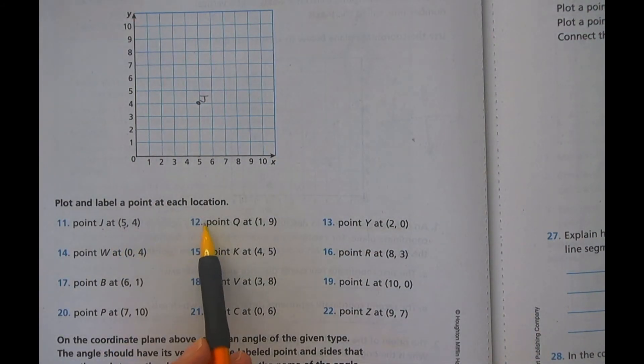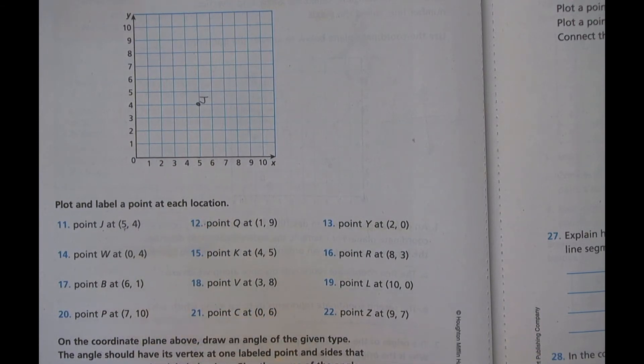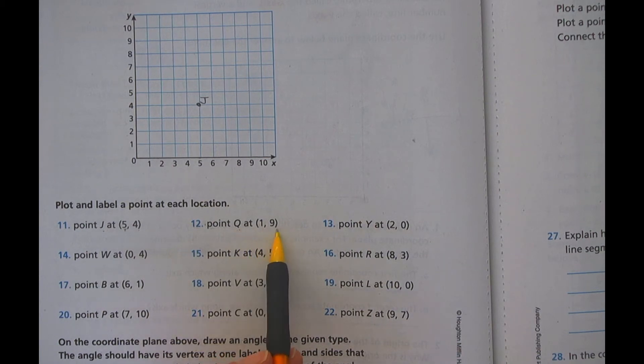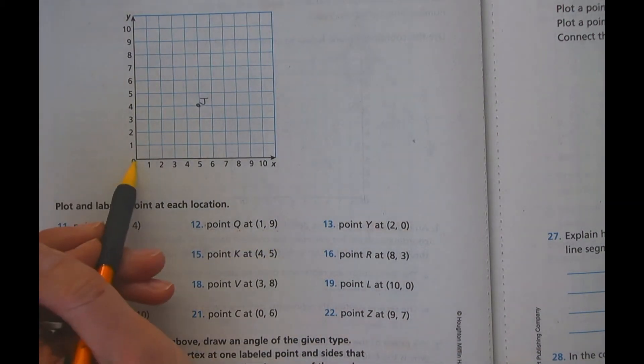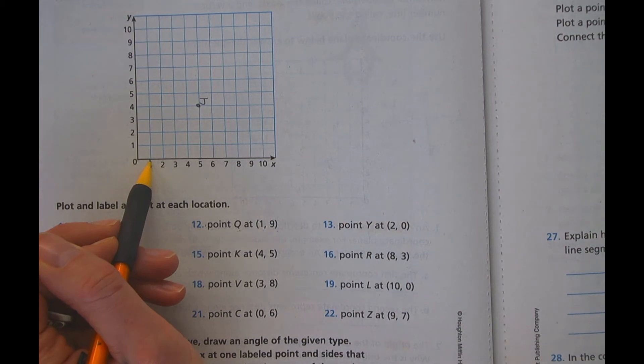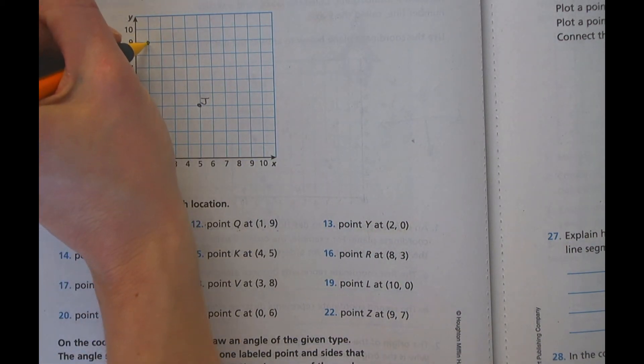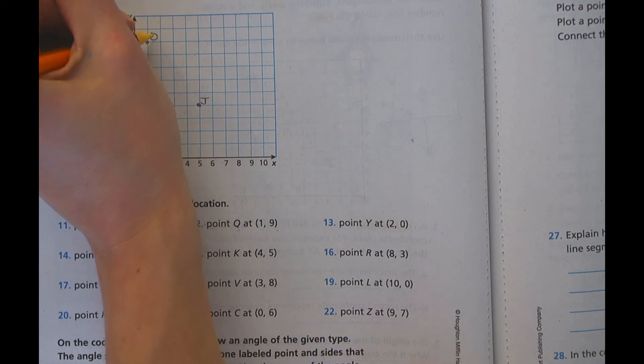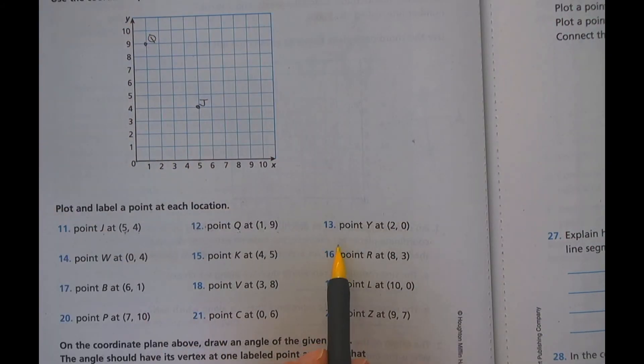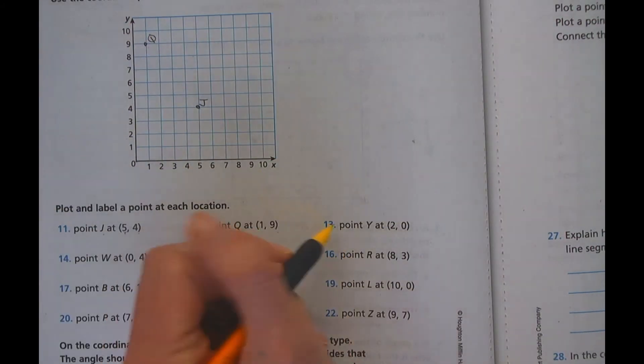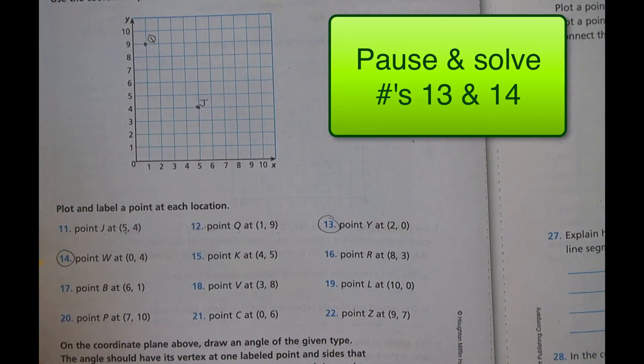Now, Mrs. Van Damme actually put a J right next to the point. If you just put a point there and don't label it, we're not going to be able to tell. And that can get really confusing, especially if you're doing quite a few. Also, if I look here for point Q at (1, 9), I'm going to go across one. Now I have to go way up to nine here. And that is going to be my point Q. Pause and try a couple. And so why don't you try 13 and 14. Take a moment to do those and come back.